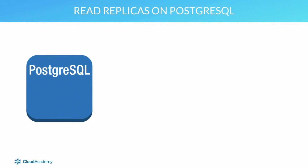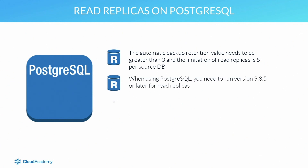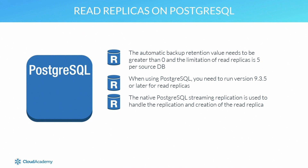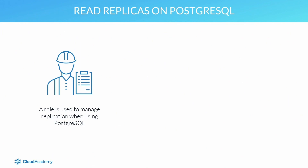For Postgres there are a few more differences. You still need the automatic backup retention to be greater than one, and the limit is five read replicas per source database. However, the replication process is slightly different — for Postgres version 9.3.5 and later, native Postgres streaming replication is used. The connection between the master and the read replica allows write-ahead log data to be sent, which replicates data asynchronously. A specific role is also introduced to manage this replication, which only has the abilities to handle replication and doesn't have any permissions to modify the data being transmitted.